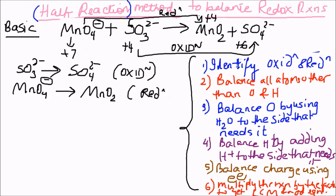The two half-reactions are: SO3²⁻ → SO4²⁻ (oxidation) and MnO4⁻ → MnO2 (reduction). Step two: balance all atoms other than oxygen and hydrogen. Sulfur is balanced one-to-one in the oxidation half, and manganese is balanced in the reduction half. Step three: balance oxygen with water. The oxidation half has four oxygens on the right and three on the left — add one H2O to the left. The reduction half has four oxygens on the left and two on the right — add two H2O to the right.